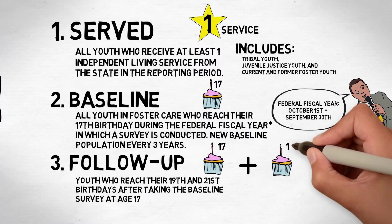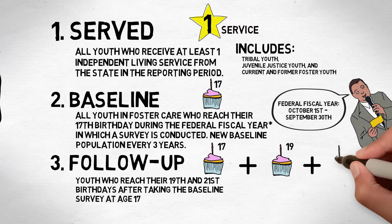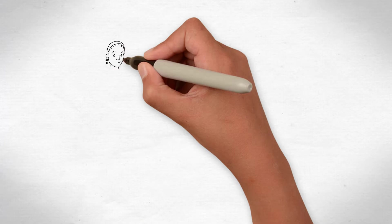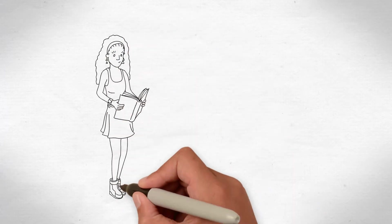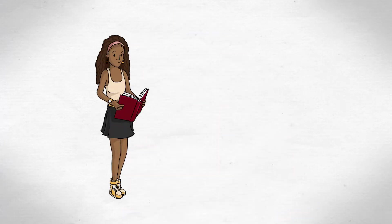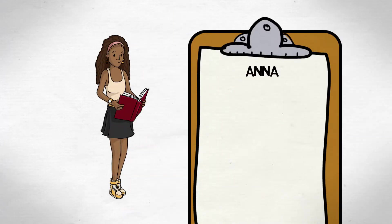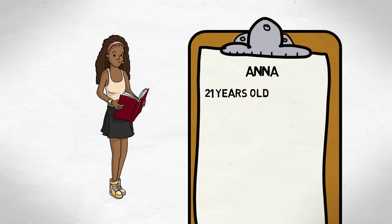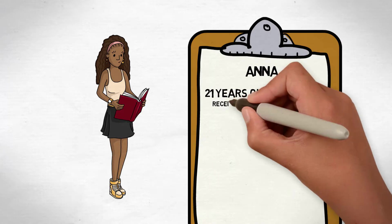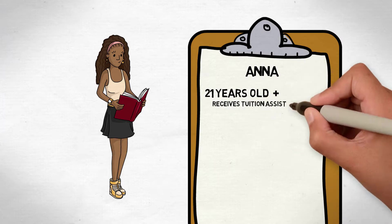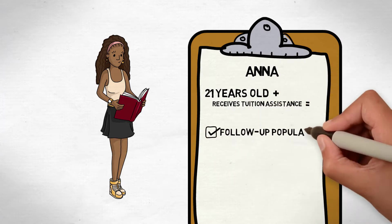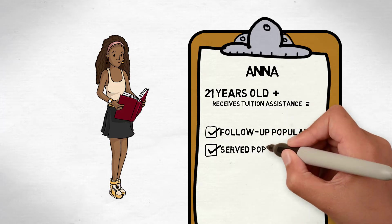Now, it's possible that a youth may be in more than one reporting population. For example, a 21-year-old youth may participate in the NYTD survey. She may also be receiving assistance from the state to complete college. As a result, she would be in both the follow-up population and the served population.